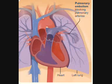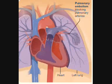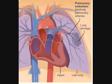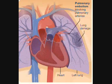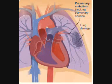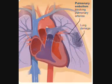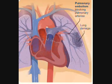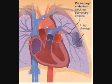This condition may result in permanent damage to a portion of the lung or other organs in the body. Among other symptoms, the pulmonary embolism may cause shortness of breath and a sudden sharp pain over the affected lung region.